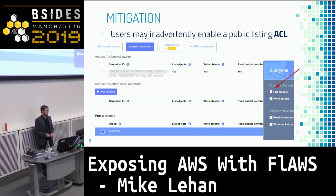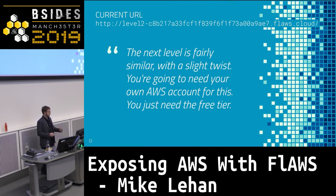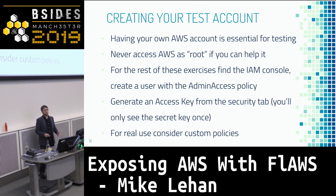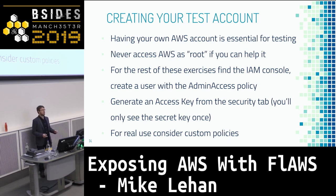On to challenge number two — this also uses the Access Control List with a slight twist, but you're going to need your own AWS account. Setting up your own AWS account is pretty helpful if you want to be testing AWS for someone else. I definitely recommend splitting out AWS accounts for different purposes wherever possible. When you create an AWS account, you get root credentials. As is standard practice, don't use root credentials for everyday access. You can create a user and give it an admin access policy or a more specific policy.